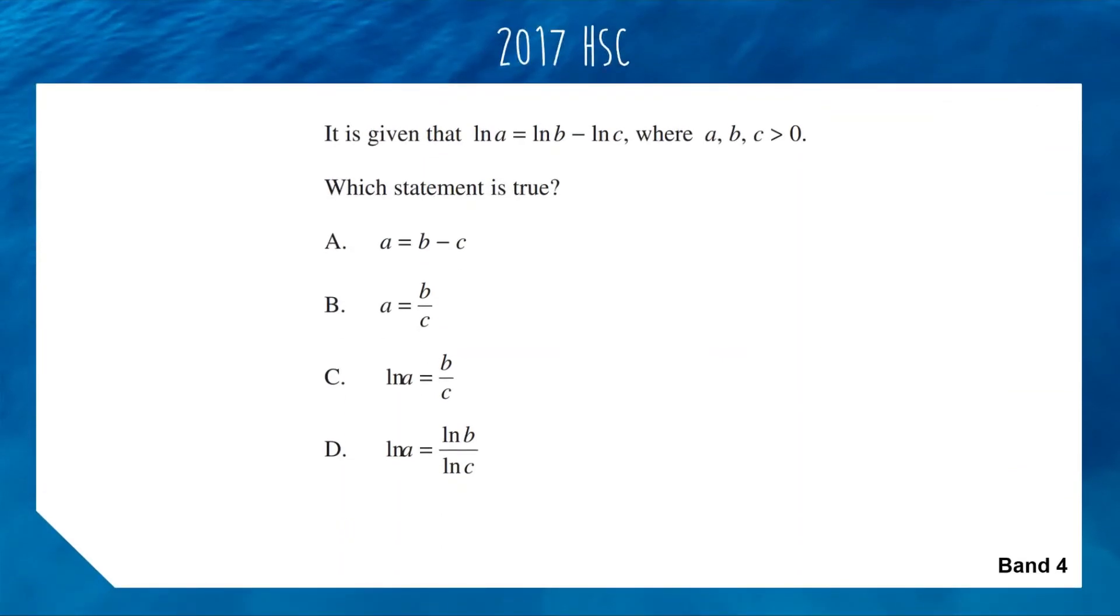For 2017, another band 4 multiple choice question. It is given that ln A equals ln B take away ln C, and A, B, and C are all positive. Which statement is true? Notice how Nessa let this weird typo get through where the ln and the A are kind of cuddling.